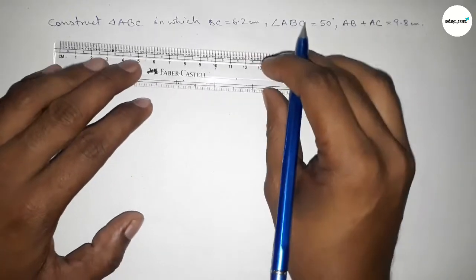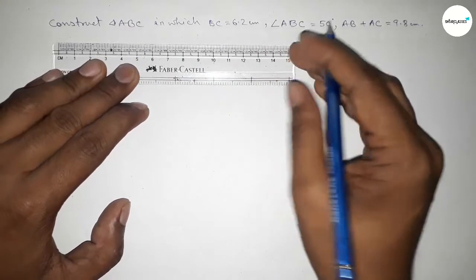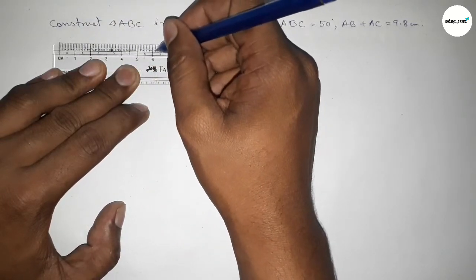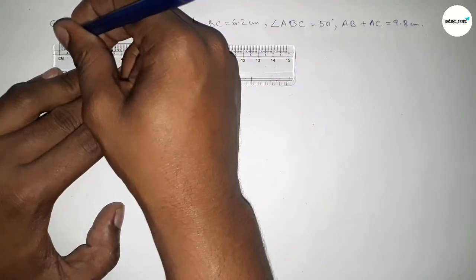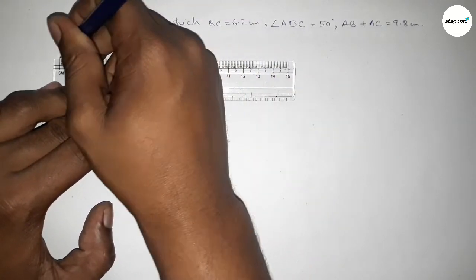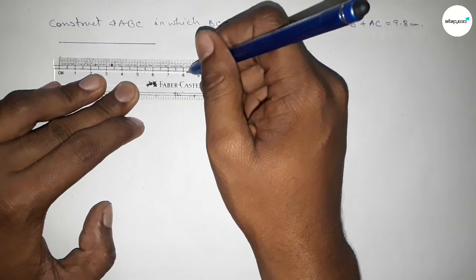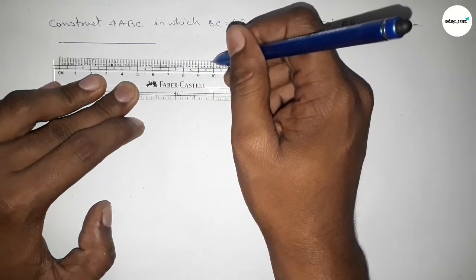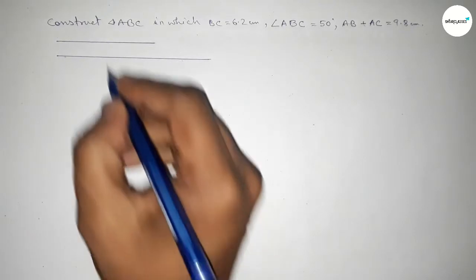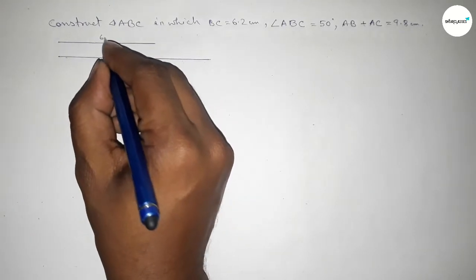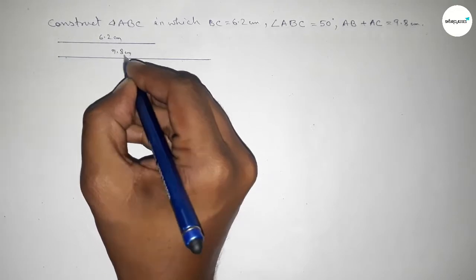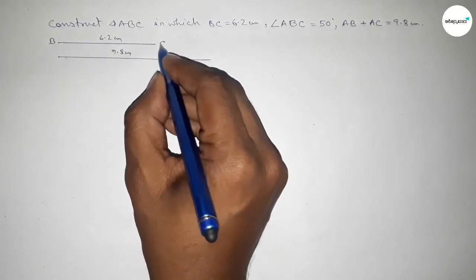Let's start the video. First of all we have to draw a line of 6.2 centimeters and another line of length 9.8 centimeters. So this one is the 6.2 centimeter line and this one is 9.8 centimeters, and this is the BC line.